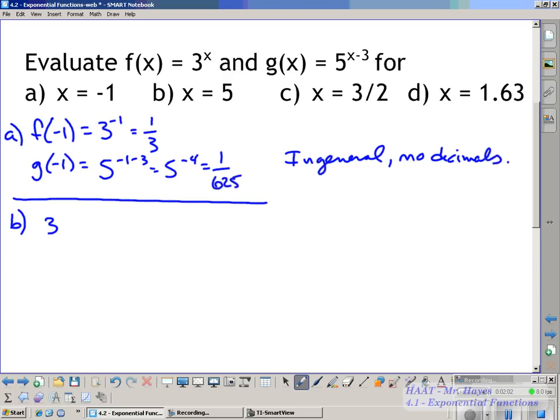So for b again, 3 to the fifth. Sorry. f of 5, 3 to the fifth power. So that will be 3, 9, 27, 81, 243. And this is where actually going through and spending some time remembering what your powers are will be helpful as well. So you get g of 5, 5 to the 5 minus 3, so that's going to be 5 squared, so that's going to be 25.